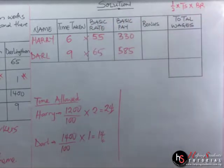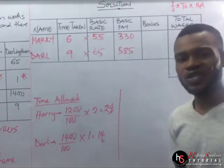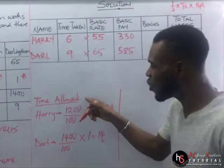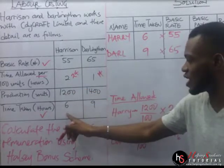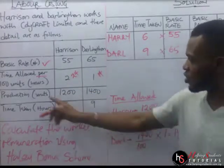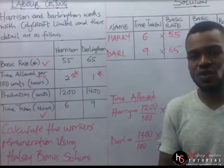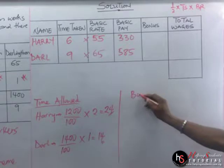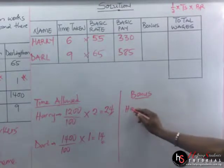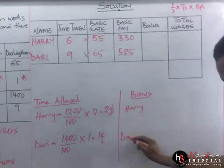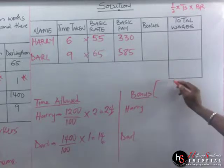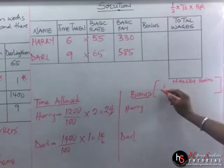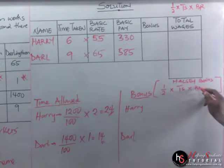There is no time saved given directly, so we must calculate it. Time saved = time allowed − time taken. This is the reason we needed the exact time allowed. Note: in some questions, time allowed may be given in seconds — convert to hours before solving. We now calculate the bonus using the Halsey formula: 1/2 × time saved × basic rate.